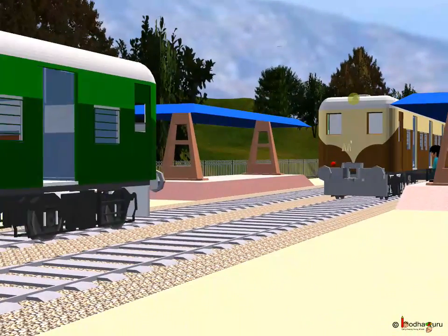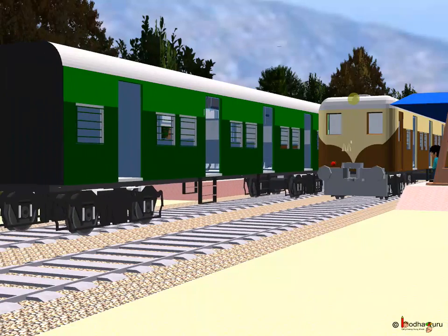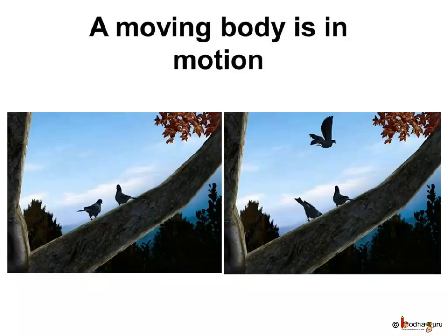The answer is very simple. In the first case, things are not moving — that is, they are at rest. And in the second case, they are moving. So when an object is moving, it is said to be in motion.